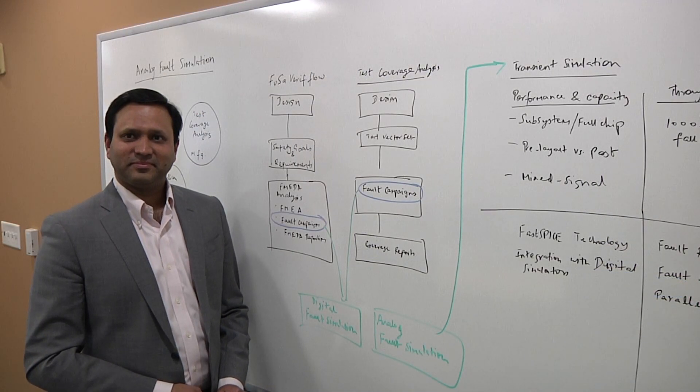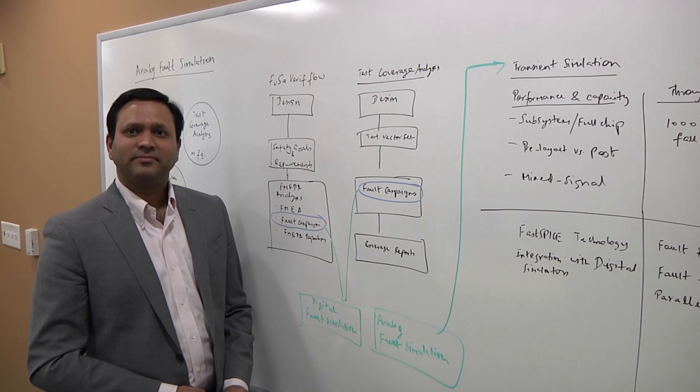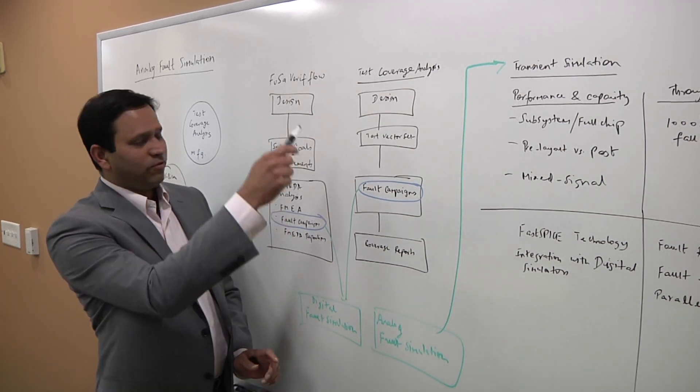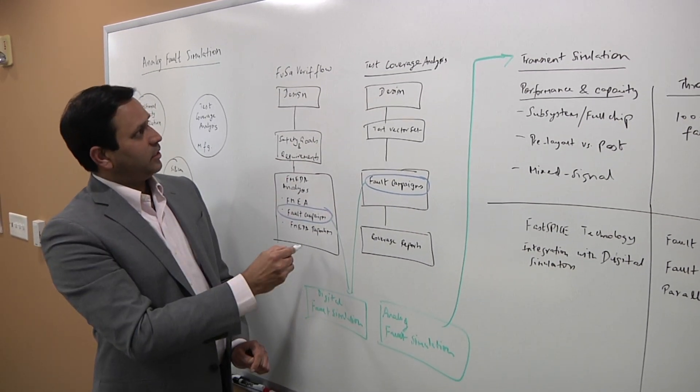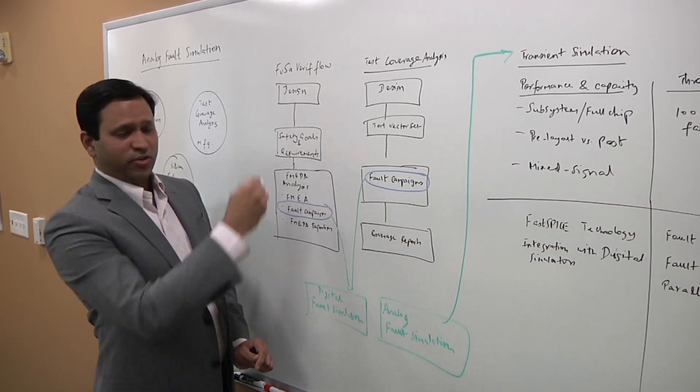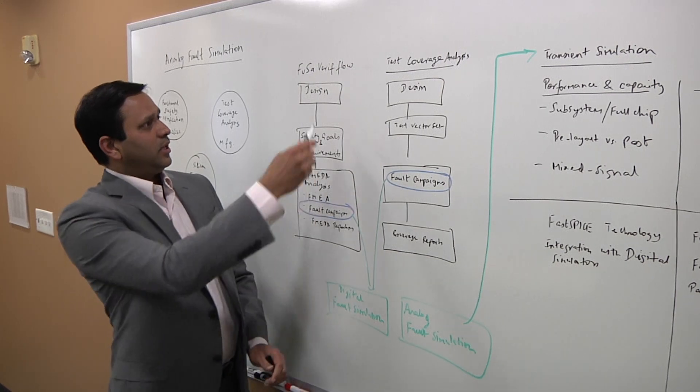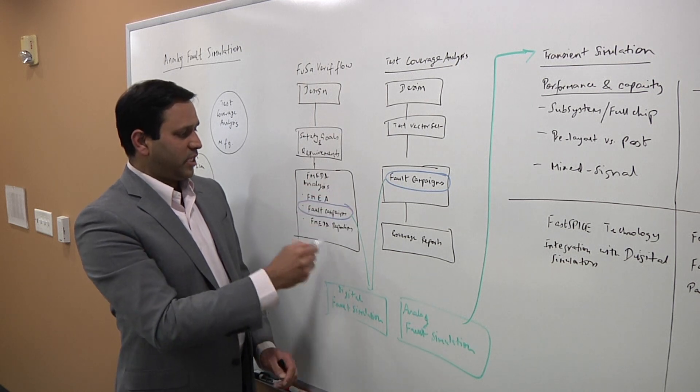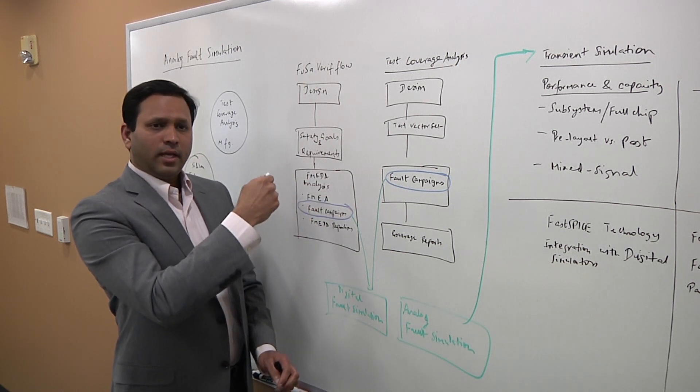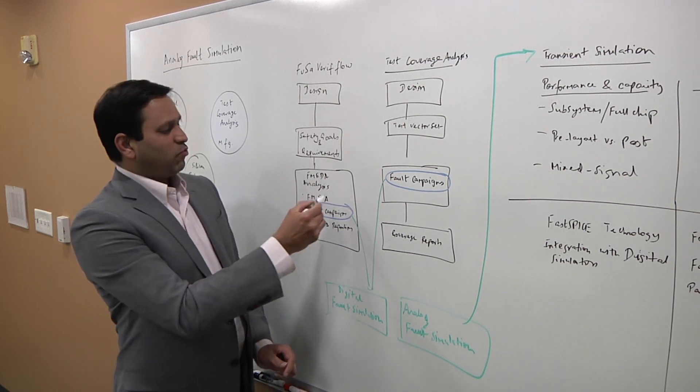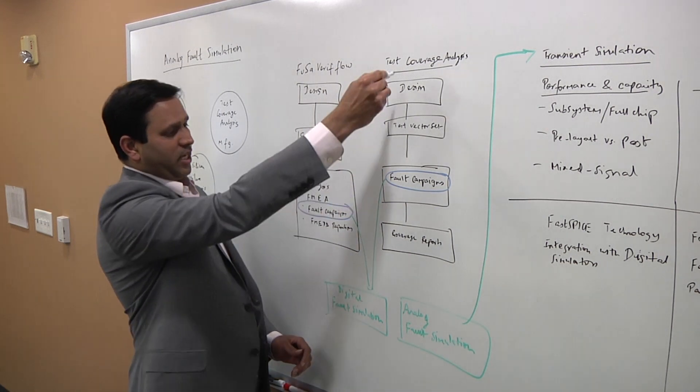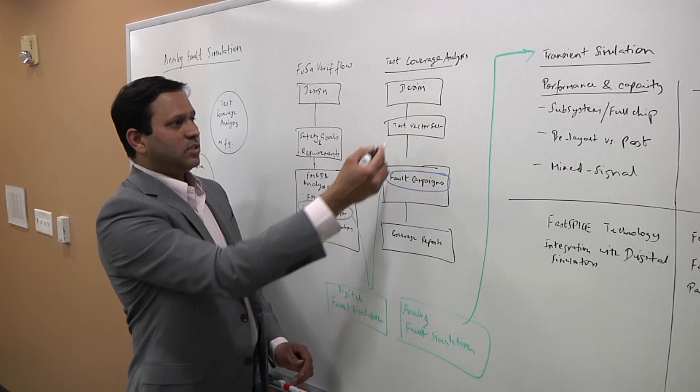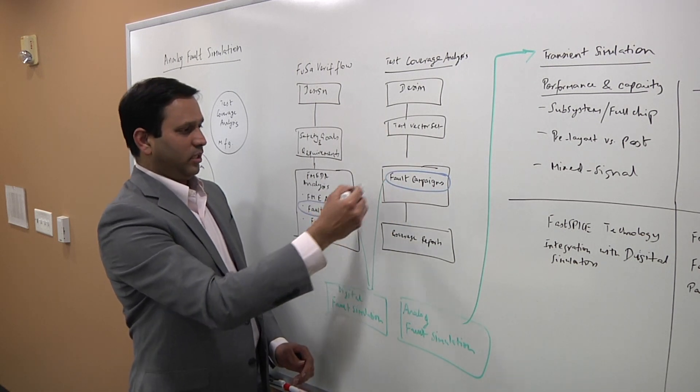So let's drill down into this. What's different here on an analog circuit and fault versus, say, a digital circuit? That's a great question, actually. I'll turn your attention to these two flow diagrams here. The first one is essentially the functional safety verification flow that typically is adopted by companies. It starts with the design and identifying what the safety goals and requirements are for the design. And then you get into this detailed FMEDA analysis, failure modes, effects, and diagnostic analysis. And that's where fault simulation comes in. Now, there is another flow here that I've drawn, which is for test coverage analysis, which is your traditional idea of grading test vectors using fault simulations, or as I call it here, as fault campaigns.